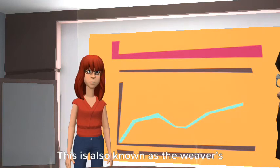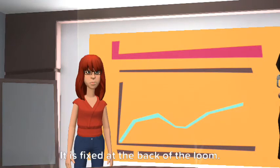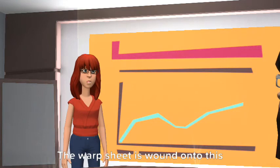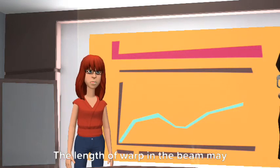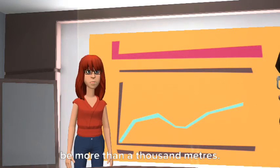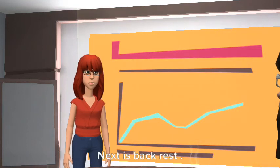Next one is warp beam. This is also known as the weaver's beam. It is fixed at the back of the loom. The warp sheet is wound onto this beam. The length of warp in the beam may be more than a thousand meters.